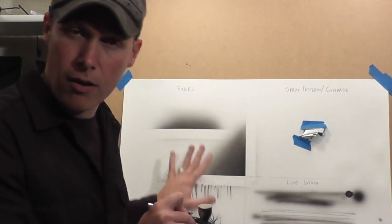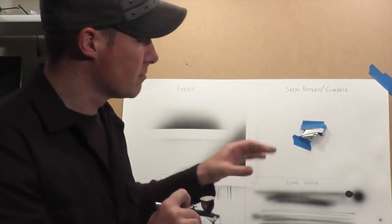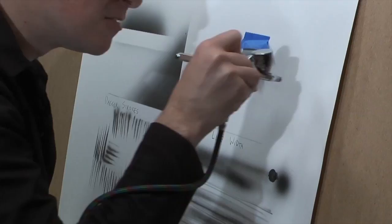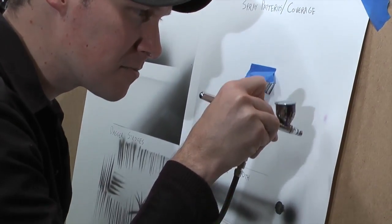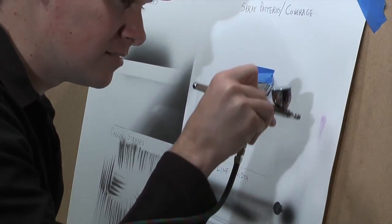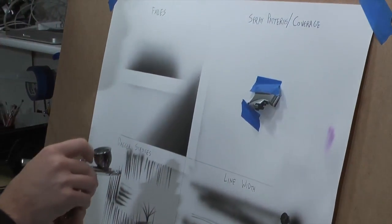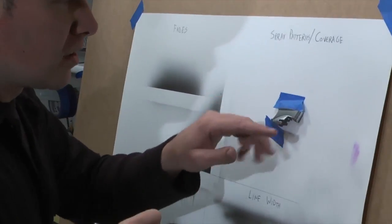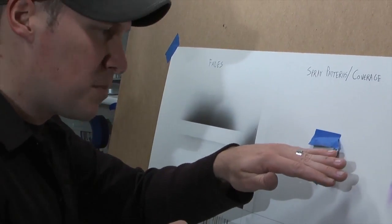I went ahead and changed colors so we can see the coverage and spray patterns on how to make this silver piece purple. Remember: all of this will equal good spraying. Always test your color, make sure it's good, spraying fine.